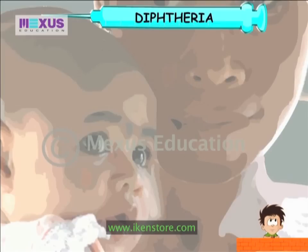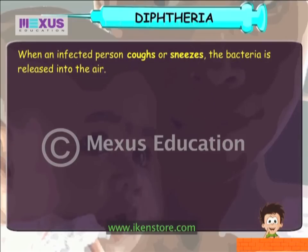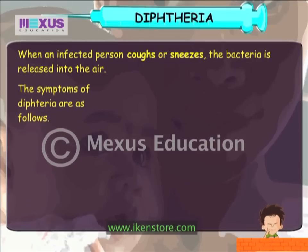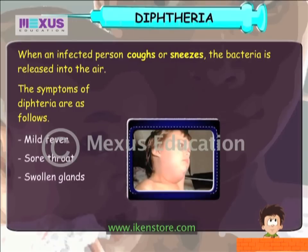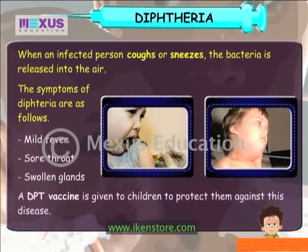Let us have a look at diphtheria and its symptoms and preventive measures. When an infected person coughs or sneezes, the bacteria is released into the air. The symptoms are mild fever, sore throat and swollen glands. A DPT vaccine is given to children to protect them against this disease.